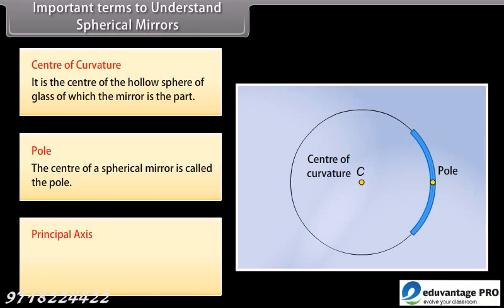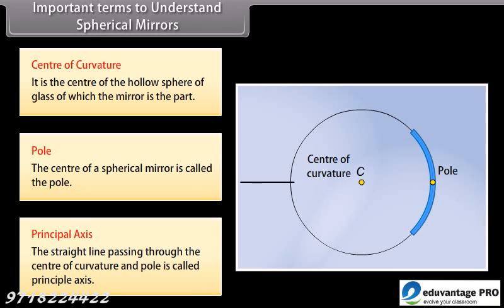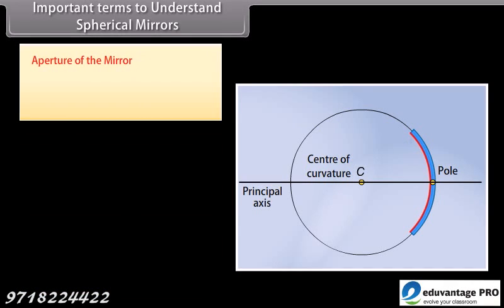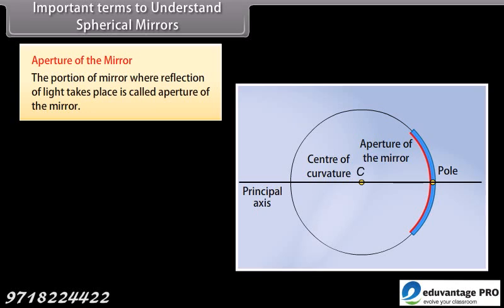Principal axis: the straight line passing through the center of curvature and pole is called the principal axis. Aperture of the mirror: the portion of the mirror where reflection of light takes place is called the aperture of the mirror.